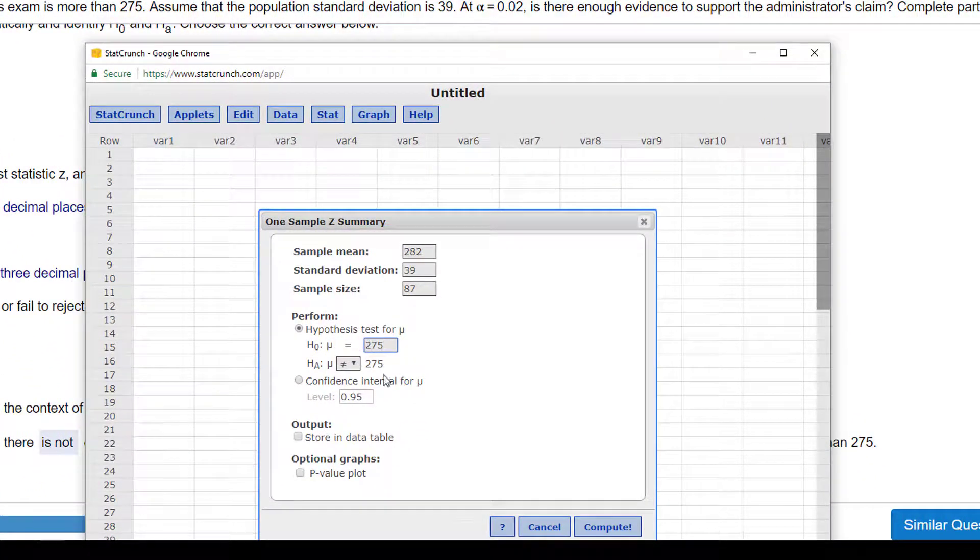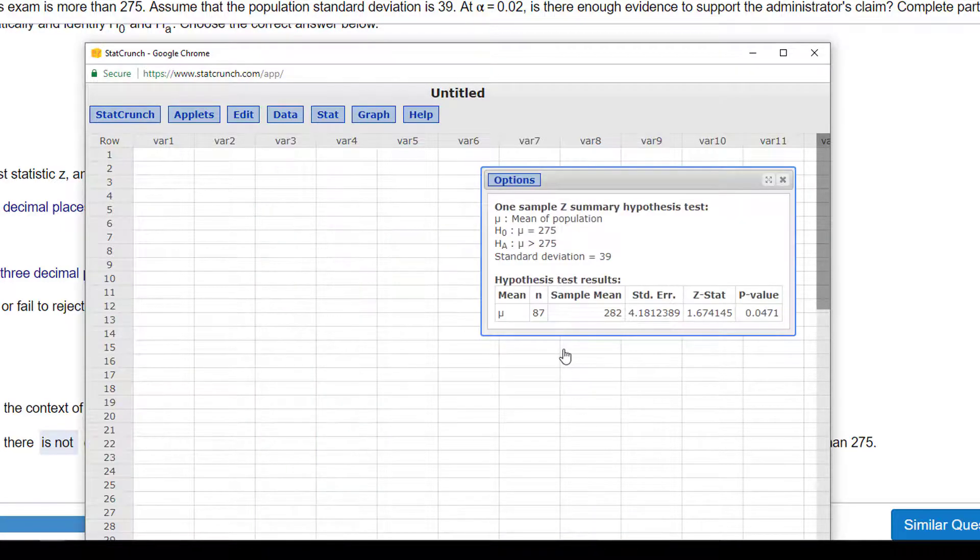And as you can see, they're going to always force it to be equal, which is what I believe. And then here, my alternative hypothesis needs to match there. So, 275.